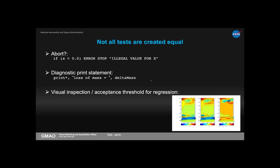Another common test is to ensure a new version of the model produces the same results as the previous version. We do a long run, create snapshots, look at deltas, and a domain expert decides if differences are scientifically acceptable. This stumbles into validation territory. The key point is that these tests are very expensive, require domain expertise, and aren't something we can do routinely, quickly, or by anyone using the software.